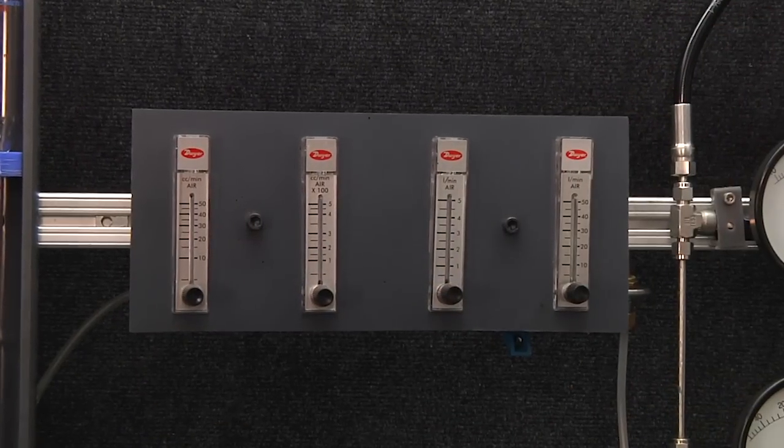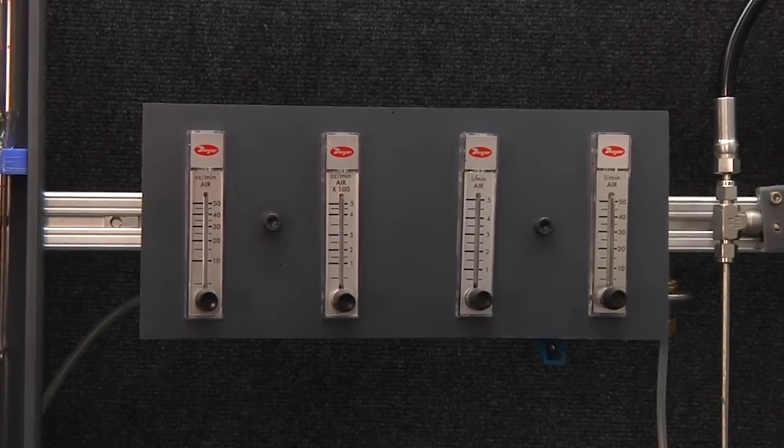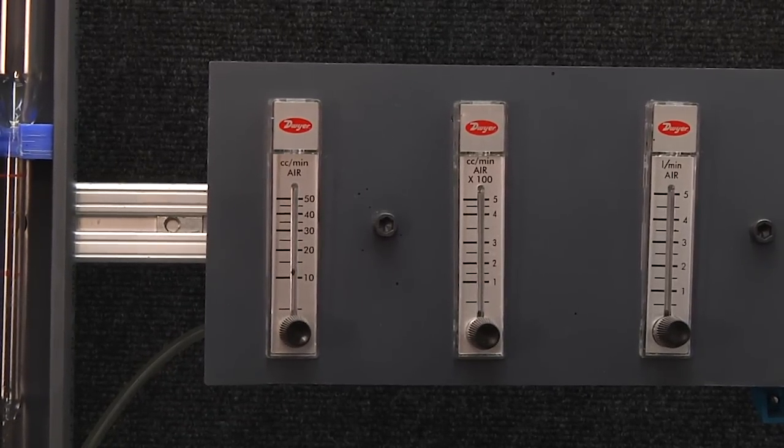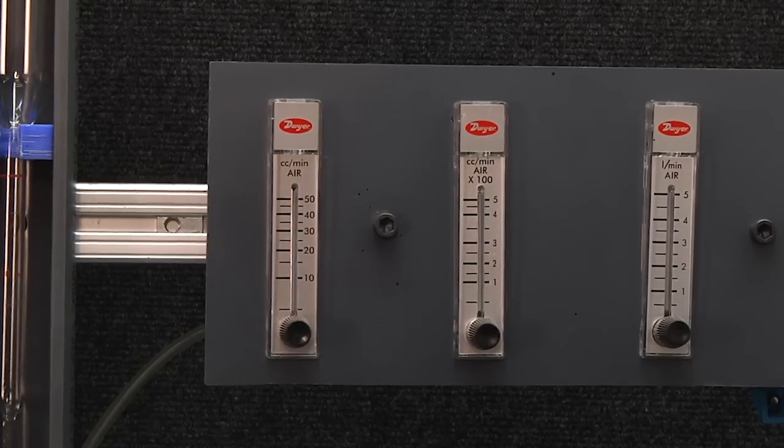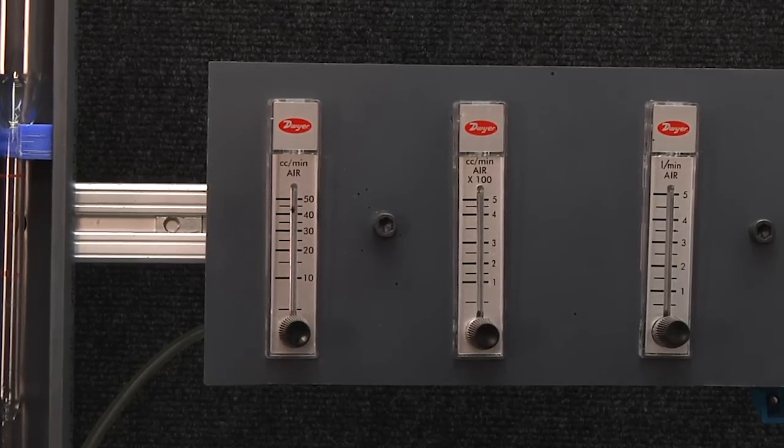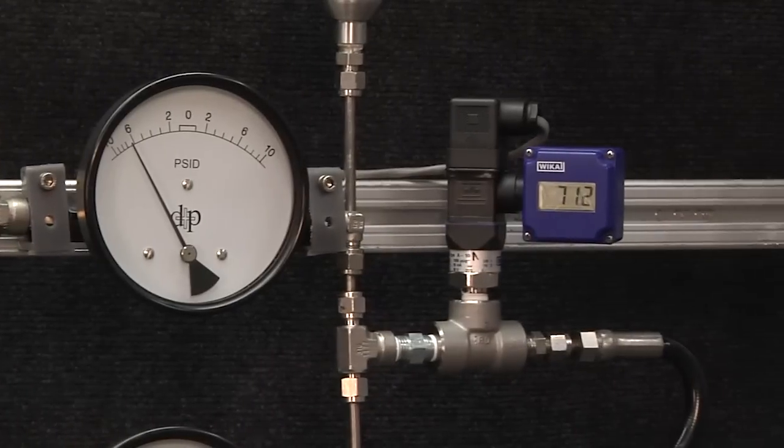Now I'm going to adjust and try to get it in the 30 to 40 milliliter per minute range. It passes through quite easily because it's hard to adjust the valve, but as you can see as we pass through the 30 to 40 range we're still at 713 psi.